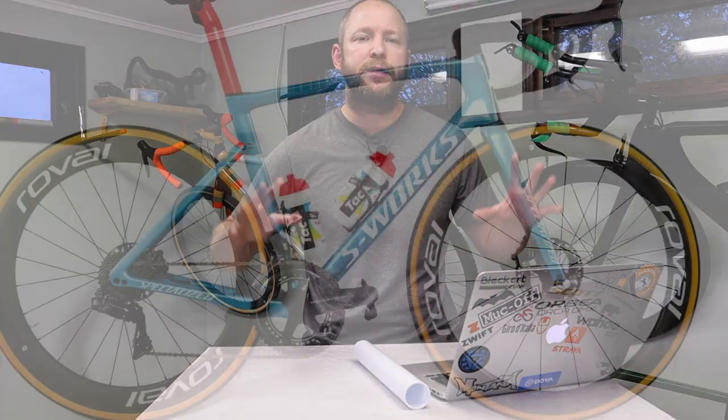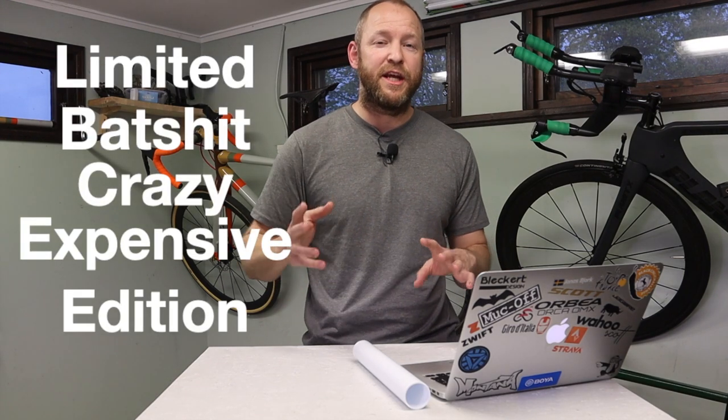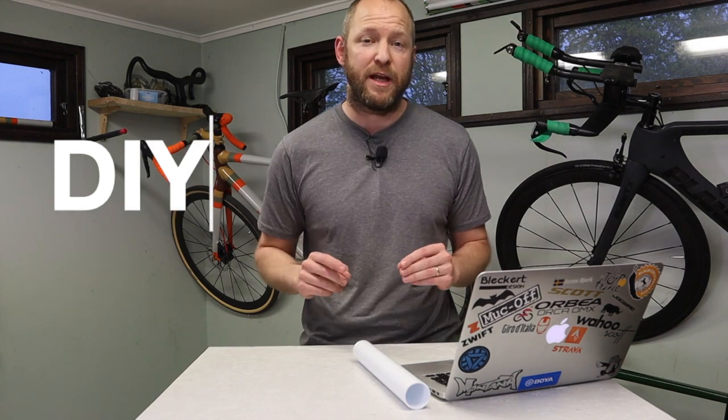Earlier in 2020, Peter Sagan's brand new custom painted specialized S-Works Tarmac was released and I think few cyclists would say no to that beauty. But it's a limited, batshit crazy expensive edition, so I decided to make a video on how you can paint your bike just like Peter's.